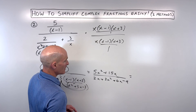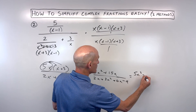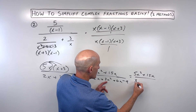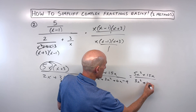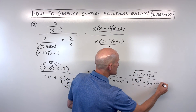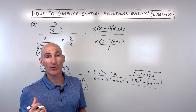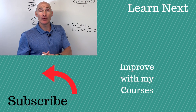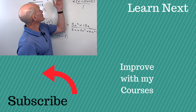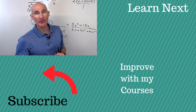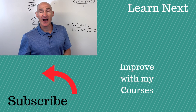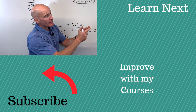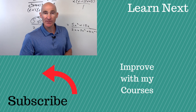Now we want to simplify. Distributing 5x gives 5x squared plus 15x. Foiling and then distributing the 3 gives 2x plus 3x squared plus 6x minus 9. Combining like terms: numerator is 5x squared plus 15x, denominator is 3x squared plus 8x minus 9. This is the exact same result as method number one. We got rid of the complex fraction — no more fractions within a fraction. Normally I would try to factor further to see if it reduces, but this is our simplified result. If you want to see more examples or practice, follow me over to that video where I talk more about simplifying complex fractions.